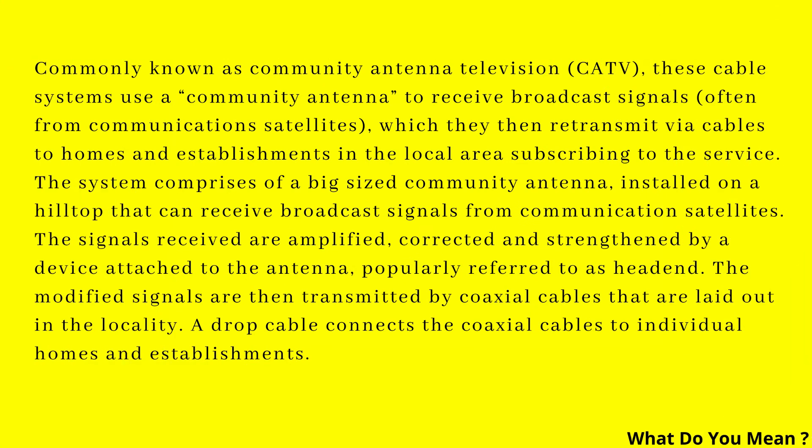Commonly known as Community Antenna Television, these cable systems use a community antenna to receive broadcast signals, often from communication satellites, which they then retransmit via cables to homes and establishments in the local area subscribing to the service.